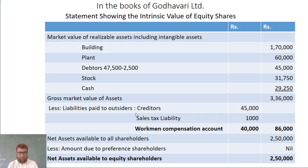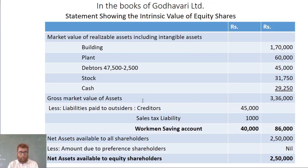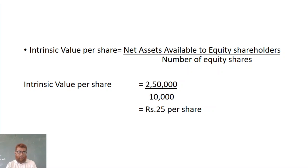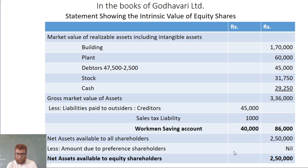Now for liabilities, including contingent liability — creditors 45,000, sales tax liability 1,000, and workman's saving fund 40,000 — total outside liabilities are 86,000. Net assets: 3,36,000 minus 86,000 equals 2,50,000. There are no preference shareholders, so net assets available to equity shareholders is 2,50,000.